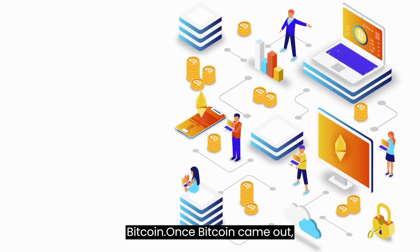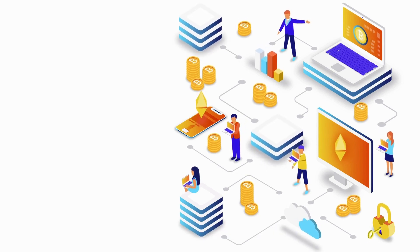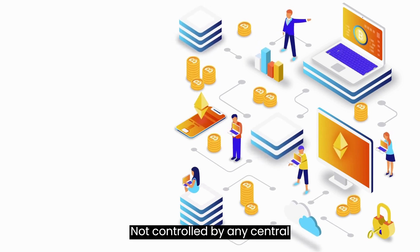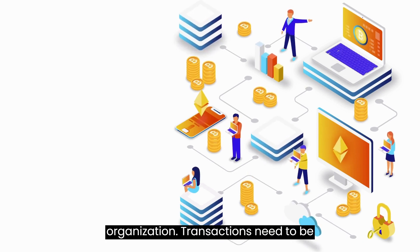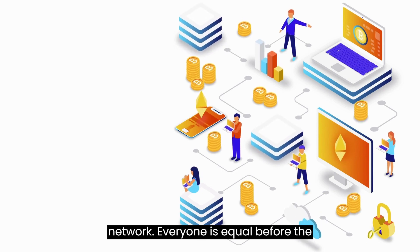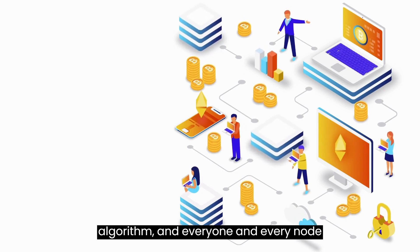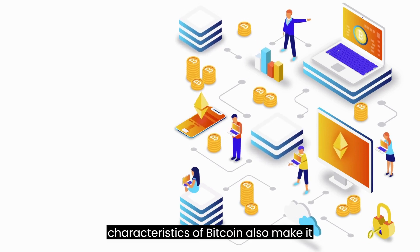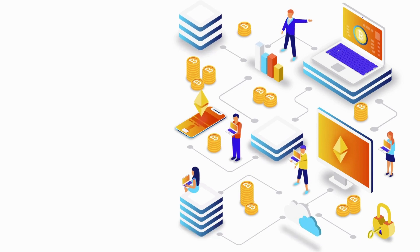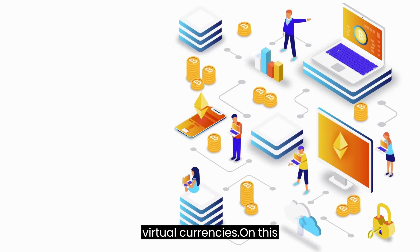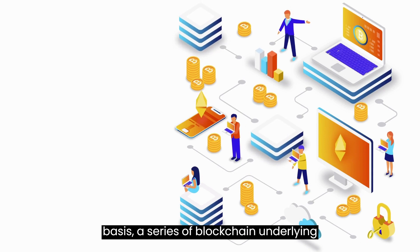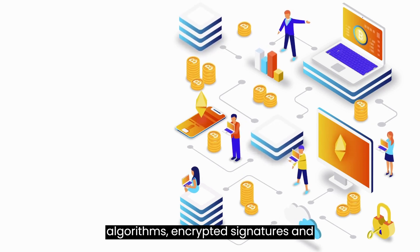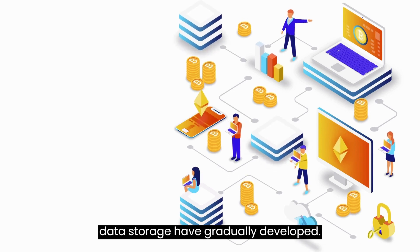It all starts with Bitcoin. Once Bitcoin came out, its characteristics were very distinctive — not controlled by any central organization, transactions need to be publicly confirmed by the entire network, everyone is equal before the algorithm, and everyone and every node can participate and supervise. These characteristics make Bitcoin fundamentally different from other virtual currencies. On this basis, blockchain underlying technologies including distributed algorithms, encrypted signatures, and data storage gradually developed.